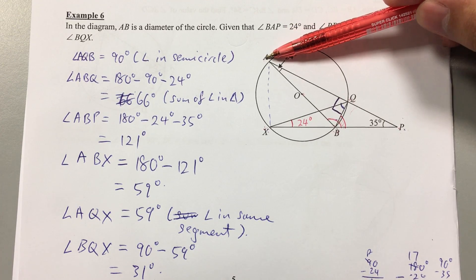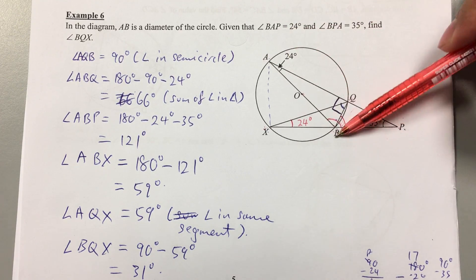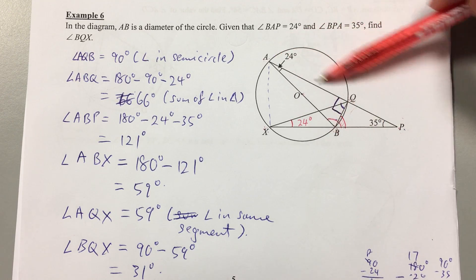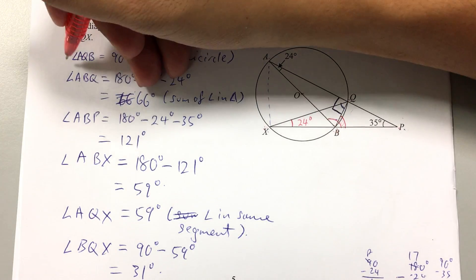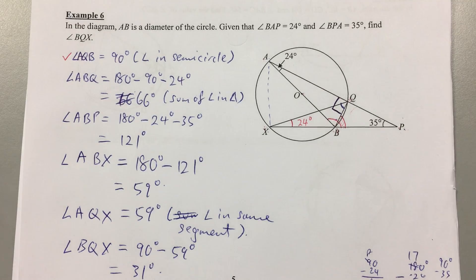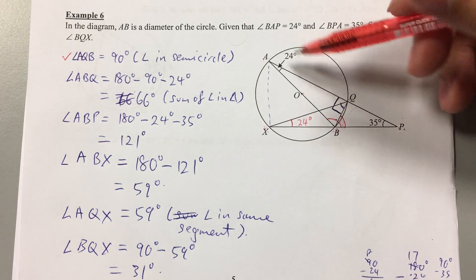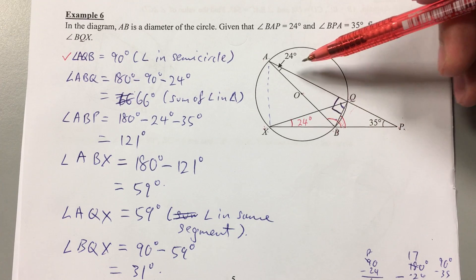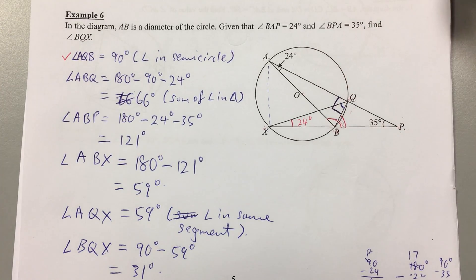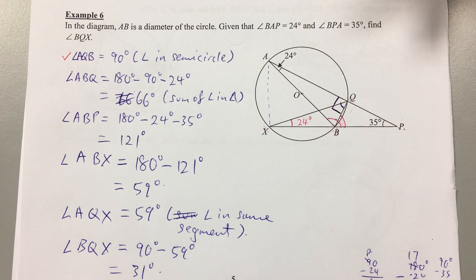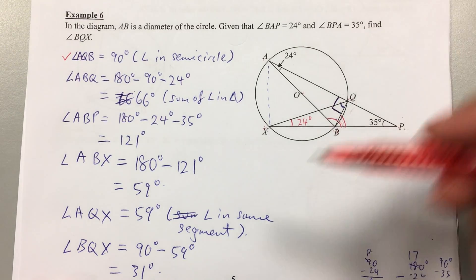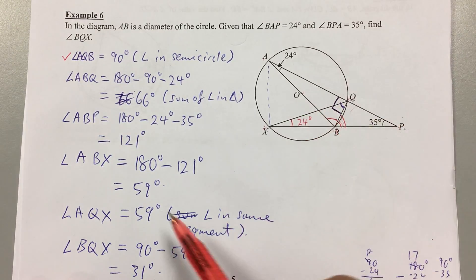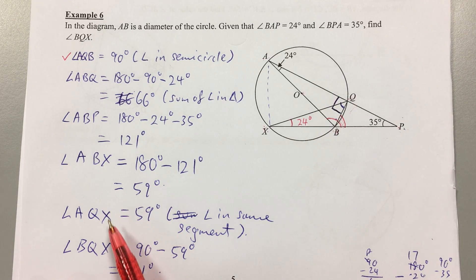In a previous video we figured out that angle AQB is 90 degrees because it's an angle in a semicircle. This is the important part you need later. In the process I also went to find what AB, ABP, and so forth are. But let me draw your attention to the next important part.